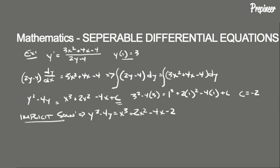Now we need to determine the explicit solution — we need to get this into the format y equals y(x). To do that, we rewrite it as y squared minus 4y minus (x cubed plus 2x squared minus 4x minus 2) equals zero.